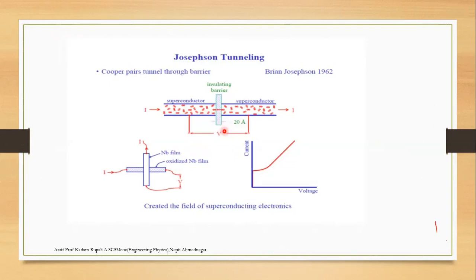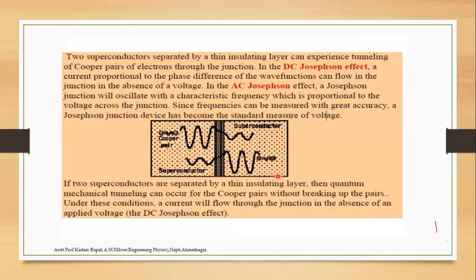When the voltage across the junction is zero and the current does not exceed the critical current, this is called the DC Josephson effect. The DC current is due to tunneling of Cooper pairs through the insulating layer. The formula for this DC current is I = Ic sin(φ), where φ is the phase difference between the wave functions of the Cooper pairs, and Ic is the critical current.